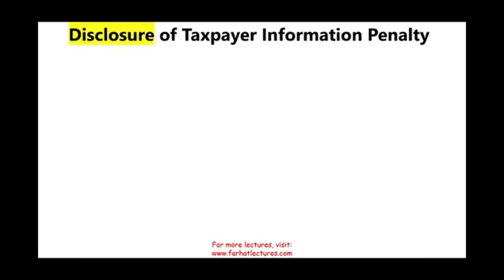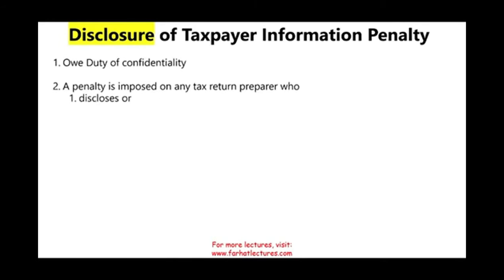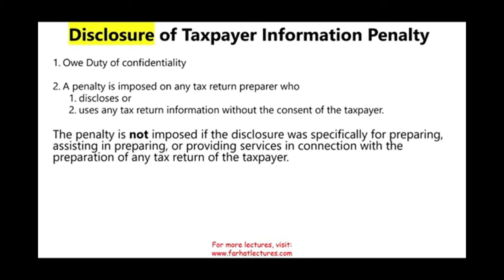Disclosure of taxpayer information carries a penalty. Preparers owe clients a duty of confidentiality — clients provide their Social Security number, W-2s, business returns, and banking information. If you disclose or use the information without the taxpayer's consent, the penalty is $250 per disclosure, maximum $10,000. The penalty is not imposed if the disclosure was specifically for preparing, assisting in preparing, or providing services in connection with preparation of the tax return.